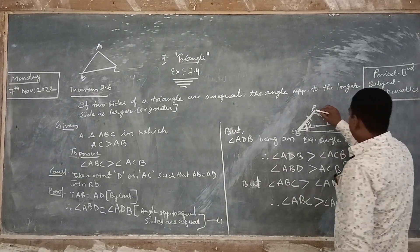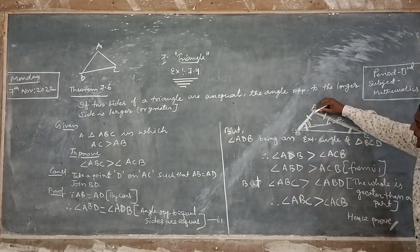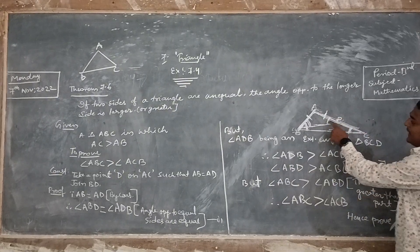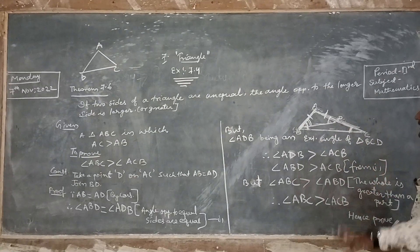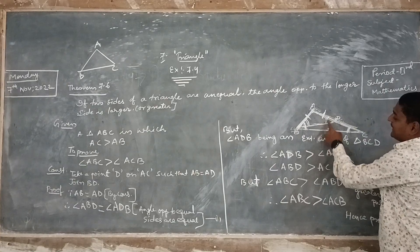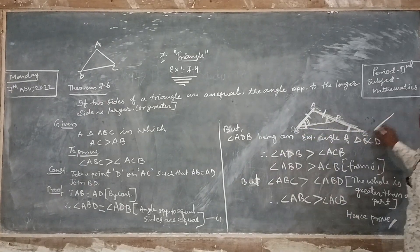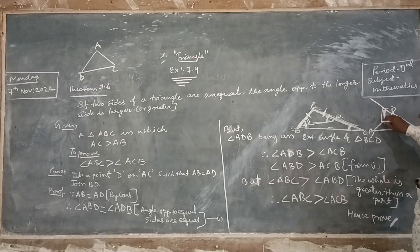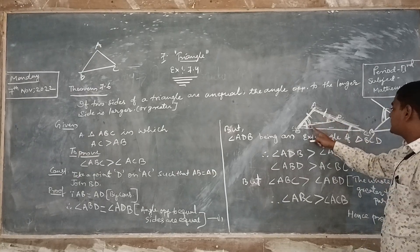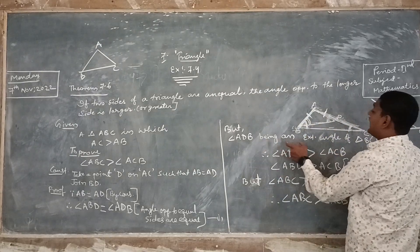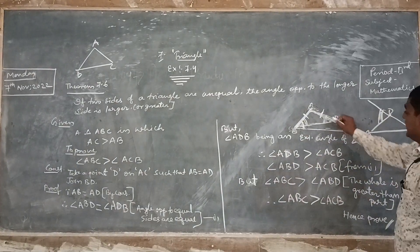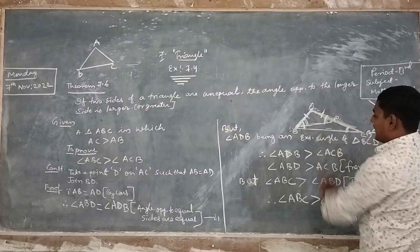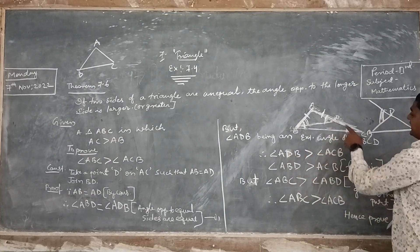Now, the main point is here: angle ADB is an exterior angle with respect to angle BDC. Therefore, angle ADB is greater than angle ACB.